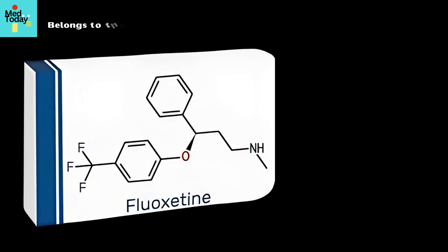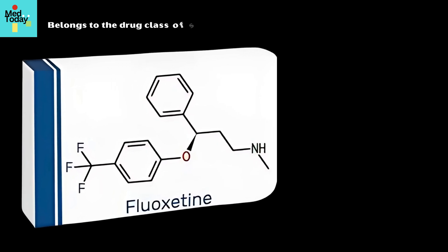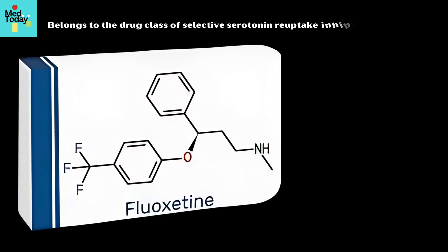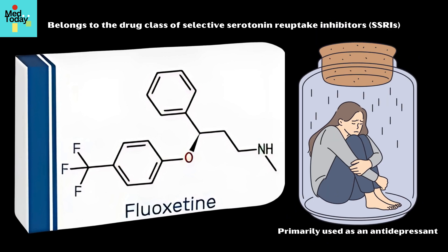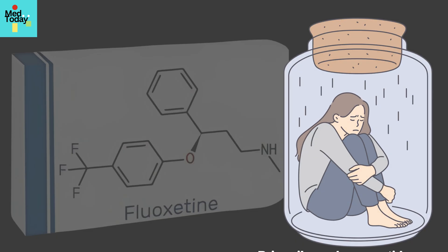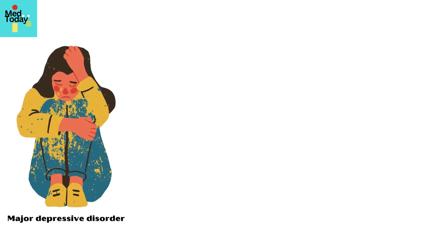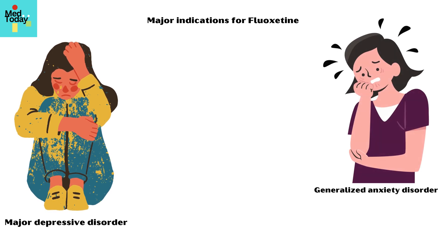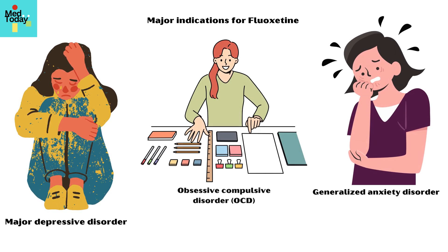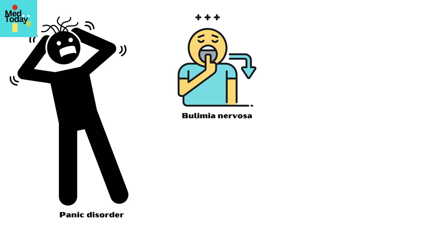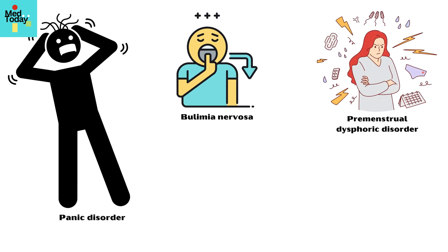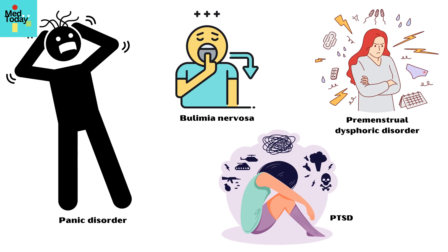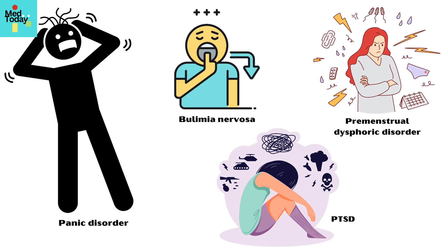Fluoxetine belongs to the drug class of selective serotonin reuptake inhibitors and is primarily used as an antidepressant among its other uses. Major indications for fluoxetine include: major depressive disorder, commonly known as depression, generalized anxiety disorder, obsessive-compulsive disorder, panic disorder, bulimia nervosa, premenstrual dysphoric disorder, and in the treatment of post-traumatic stress disorder, or PTSD.